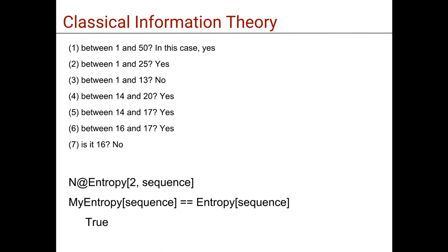So let's say the number is 17, then you could ask the following questions. Is the number between 1 and 50? In this case it's yes. Is it between 1 and 25? Yes. Between 1 and 13? No. Between 14 and 20? Yes. Between 14 and 17? Yes. Between 16 and 17? Yes. Is it 16? No. It is therefore 17 and you can see how it took 7 questions and it would have taken 6 actually.